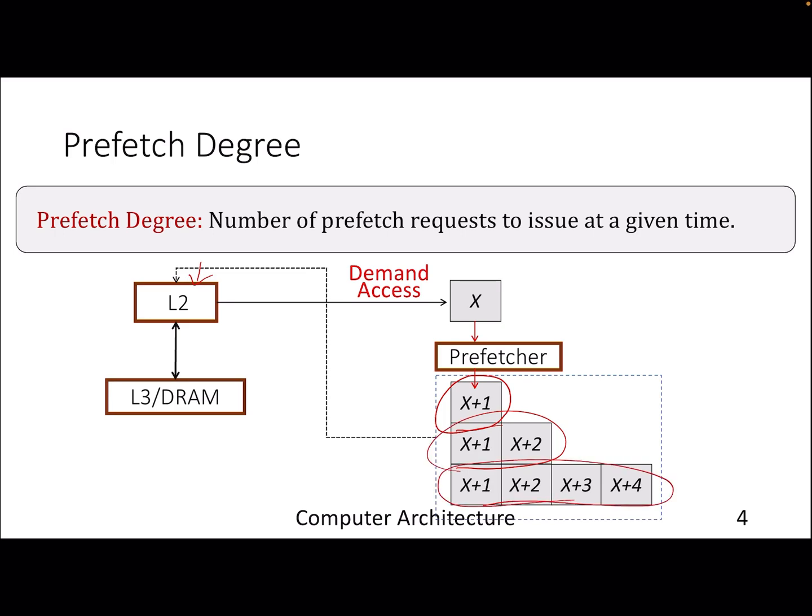It's a trade-off. We can't prefetch pretty aggressively unless we know that whatever we are prefetching is actually correct all the time, they are accurate and useful. Otherwise it may happen that whatever we are bringing into the cache, they are actually creating pollution in the cache because caches are of fixed size. If we bring something that's not useful, it will kick out something which is already there in the cache, eventually causing pollution.